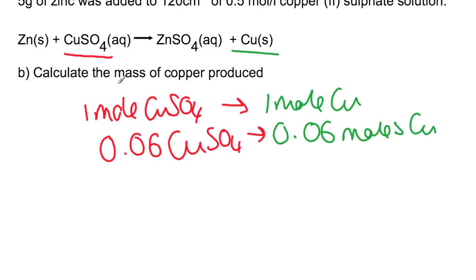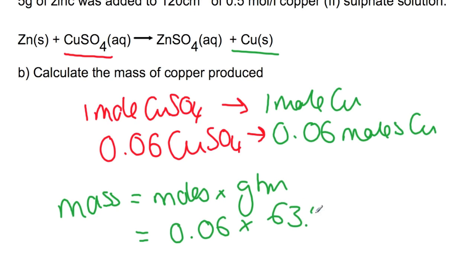We've been asked to calculate the mass of copper. So the mass will equal moles times the gram formula mass. So we've got 0.06 multiplied by 63.5 to give us 3.81 grams of copper produced.